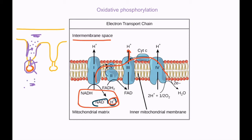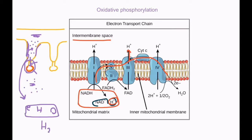The passage of hydrogen ions through the stalked particle stimulates ATP synthase to produce ATP. The electrons that passed through the electron transport chain and the hydrogen ions in the matrix combine with oxygen from aerobic respiration to form water, H₂O — the product of respiration. This theory explaining ATP production during oxidative phosphorylation is known as chemiosmosis.